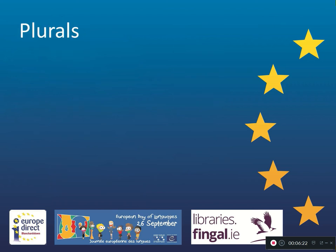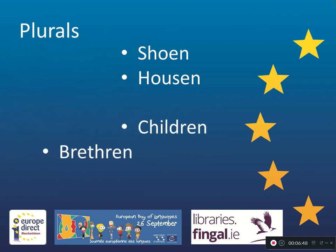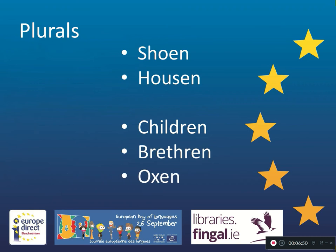Plurals are an interesting one. Today, when we use a plural word, we often just put an 's' on the end. But this wasn't always the case. Somebody speaking Old English in Anglo-Saxon times might have said 'shoeing' for shoes or 'housing' for houses — they added an '-en' ending. This has now changed in English, but this Old Anglo-Saxon way of doing plurals has remained in certain words such as children, brethren and oxen. Those remnants of Germanic have remained to this day.